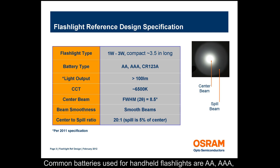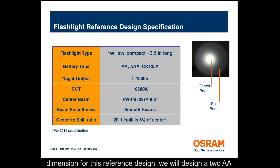Common batteries used for handheld flashlights are AA, AAA, and CR123A. Targeting a common handheld mechanical dimension for this reference design, we will design a 2 AA battery configuration.